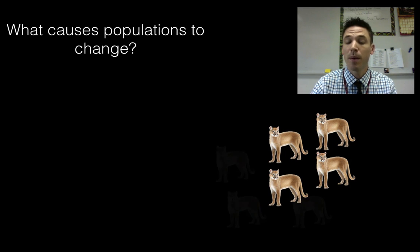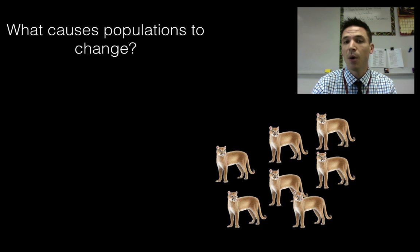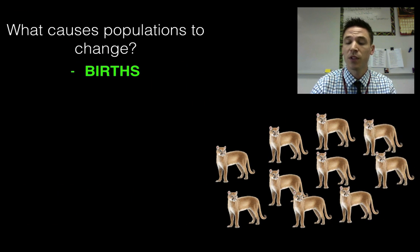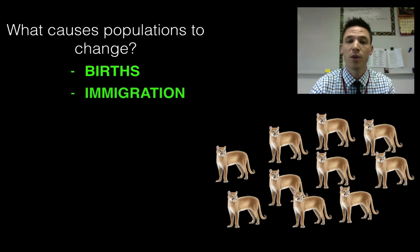The first two that we'll talk about are going to be the things that cause populations to go up. So if I have four panthers here and the population goes up to seven, how is that possible? Well, one thing that should come to mind are births. Births cause populations to go up. What else could cause a population to go up aside from births? Well, how about if some panthers move into the population? In other words, immigration. So it's these two working together that cause the population size to increase.